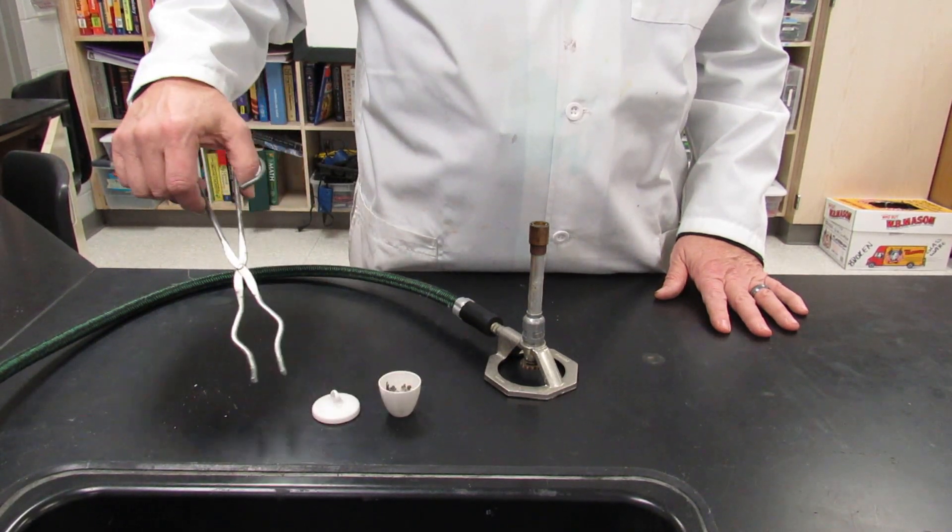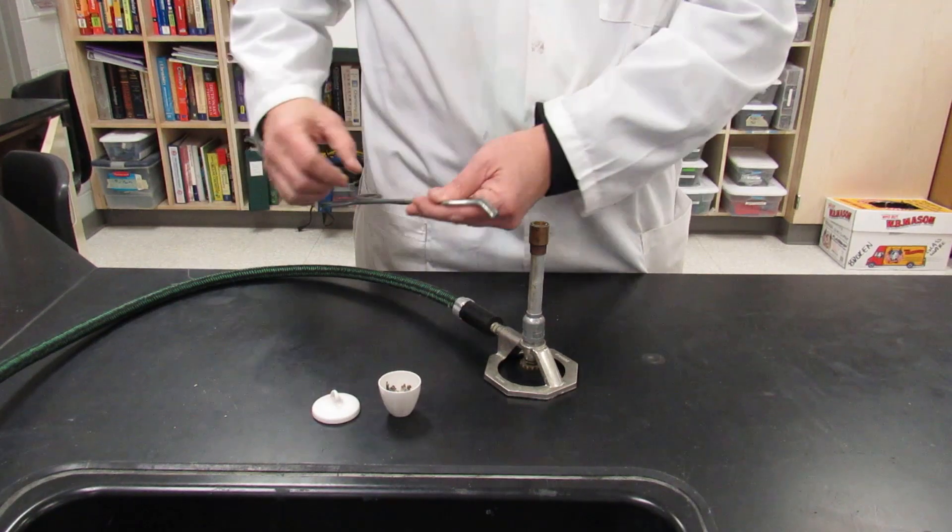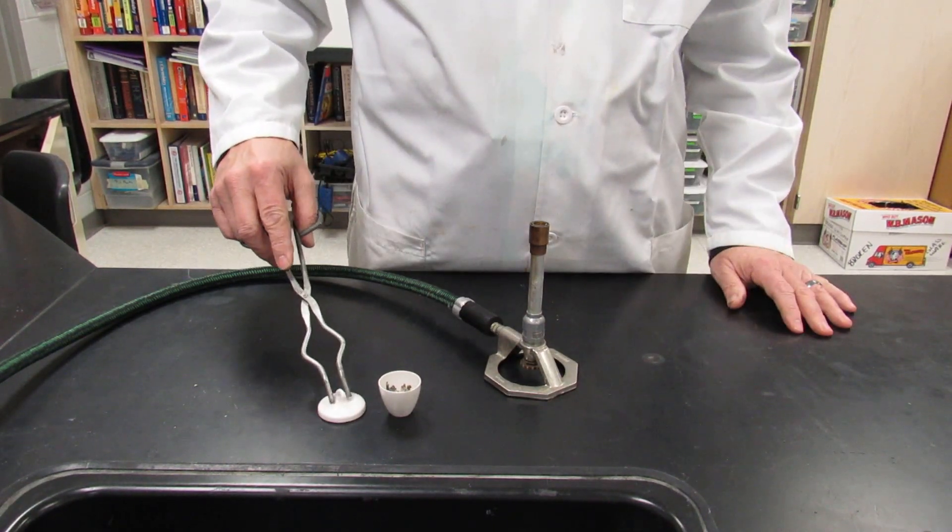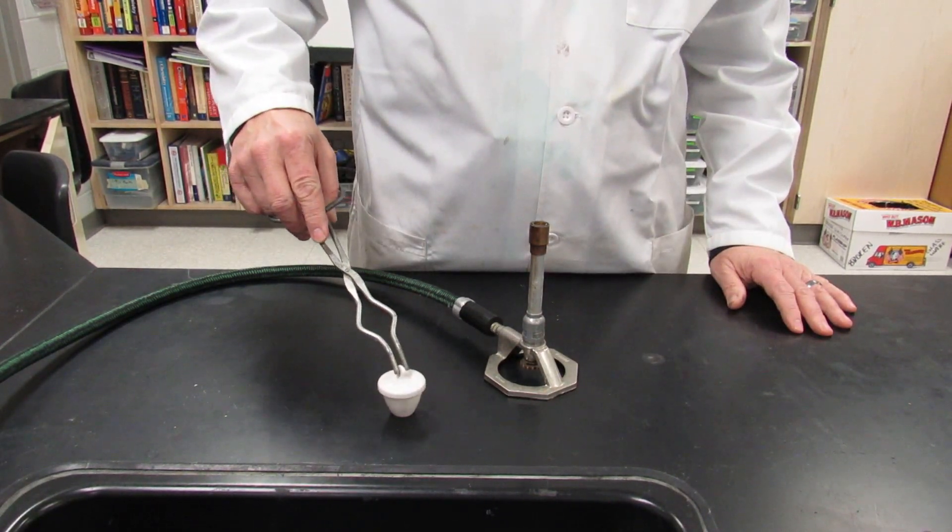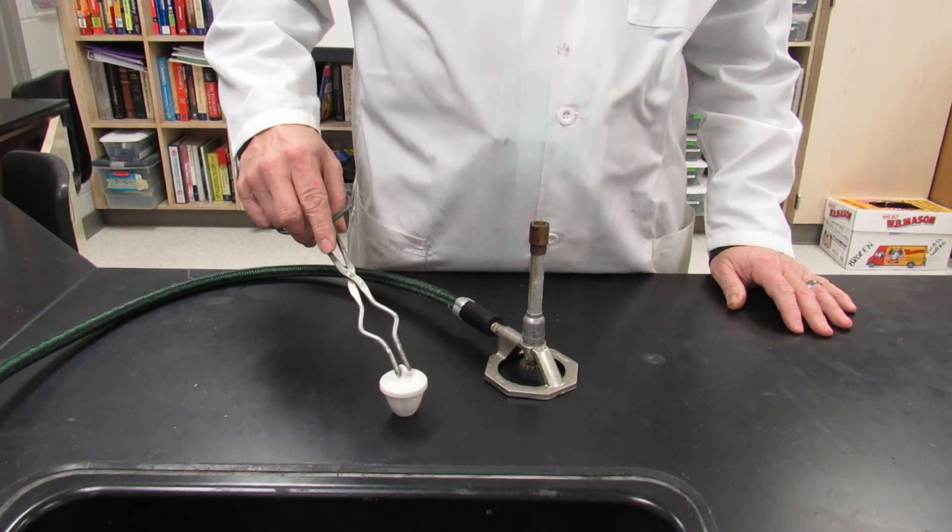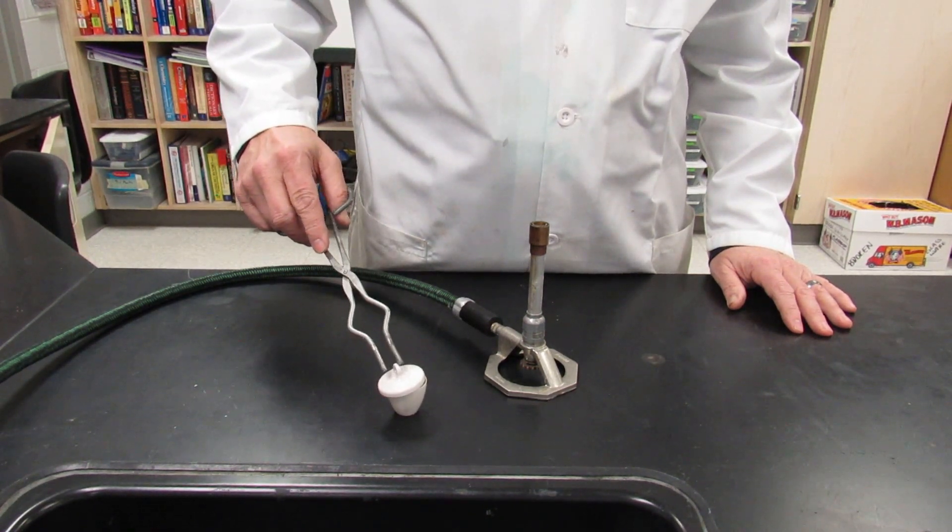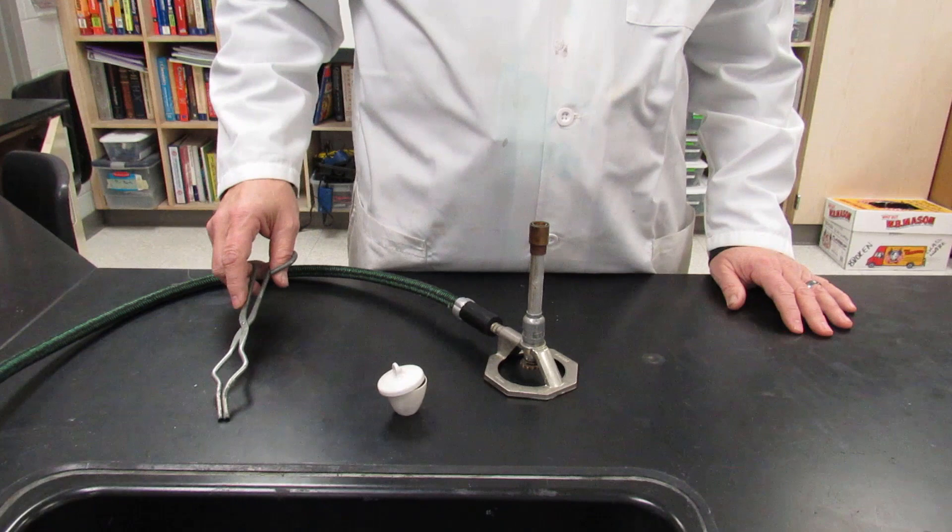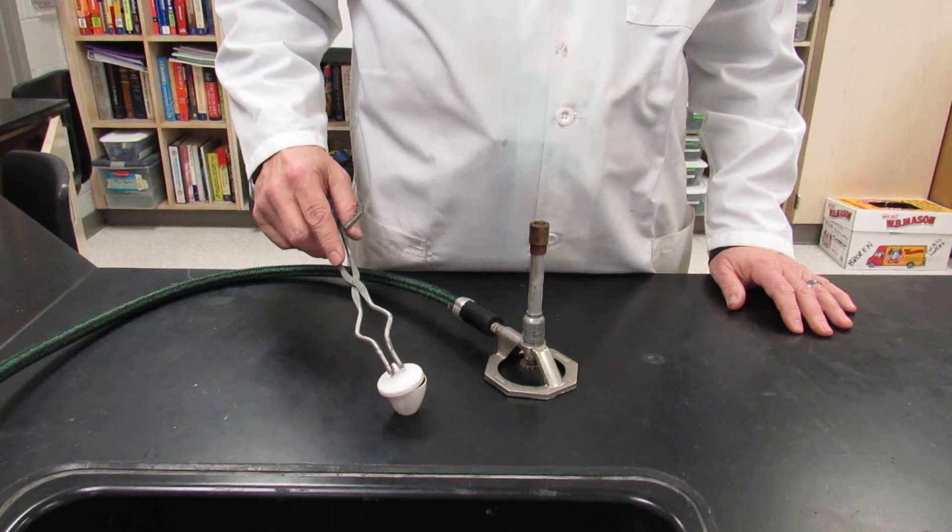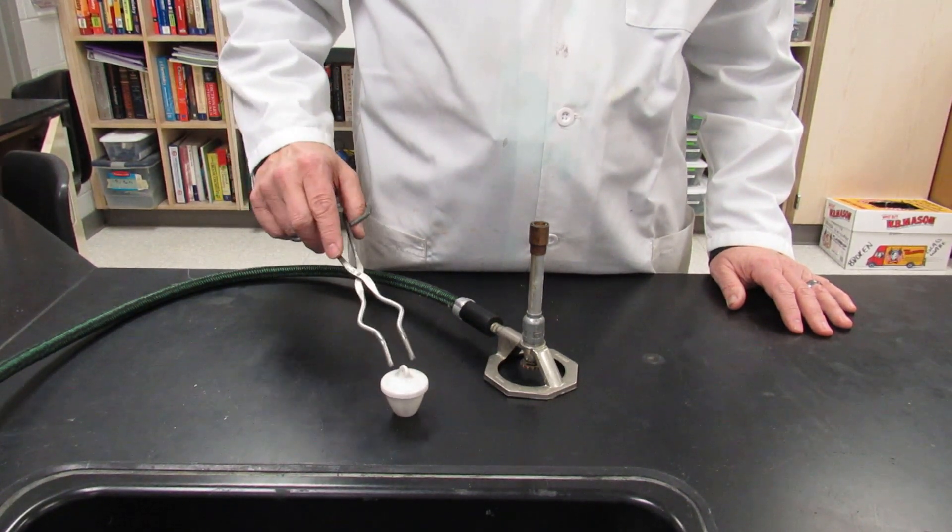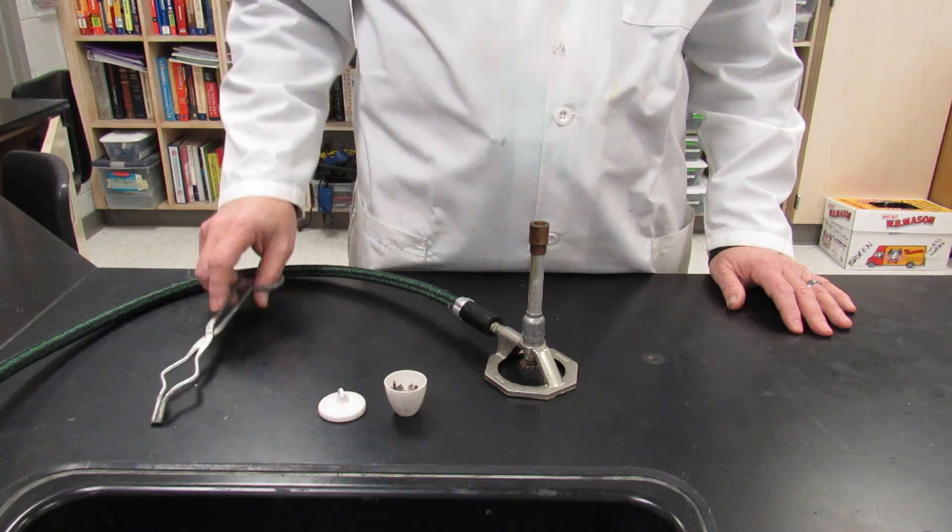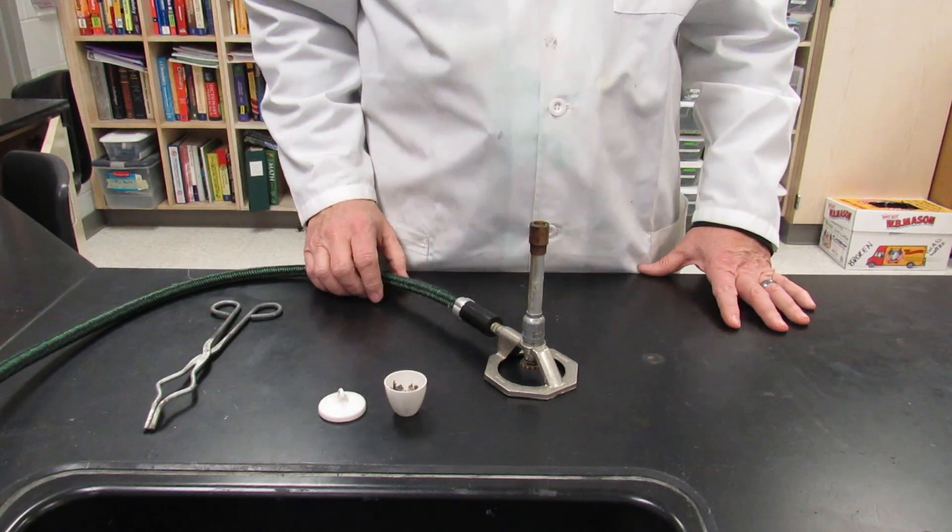You don't want the first time you're doing this to be when you're at 1800 degrees over top of a Bunsen burner. So, take it off, put it on. Practice this quite a few times. You'll also need to tilt the crucible lid to allow a little bit of air in. Do that over and over again until you feel very comfortable manipulating the lid.